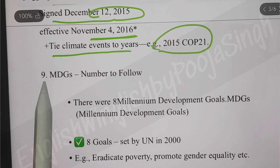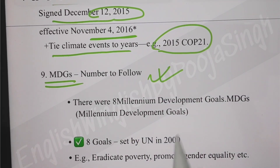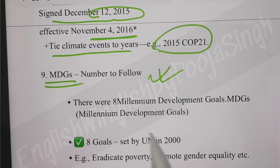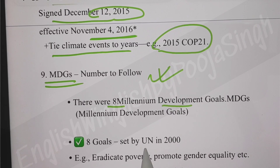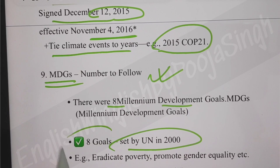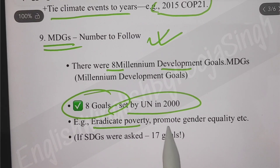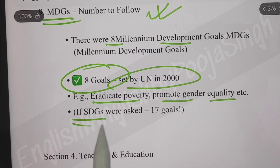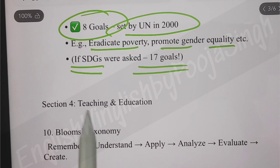They asked about MDGs (Millennium Development Goals). As discussed in previous lectures on most-repeated PYQs, there were eight Millennial Development Goals - the UN decided to follow goals like eradicate poverty, promote gender equality, etc. If SDGs are asked, there are 17 goals. Then for Teaching and Aptitude, questions about Bloom's Taxonomy were asked: Remember, Understand, Apply, Analyze - in statement type format.